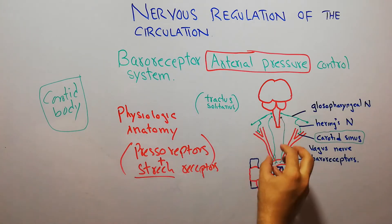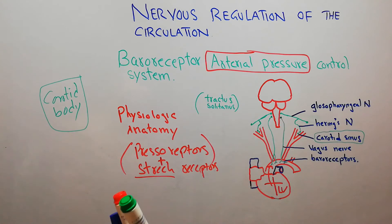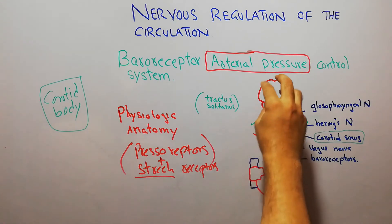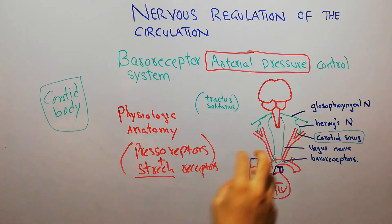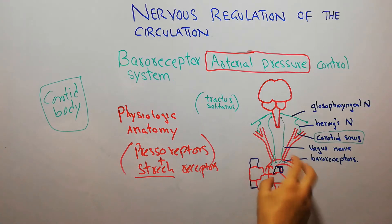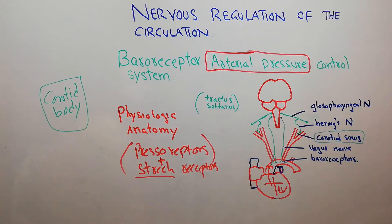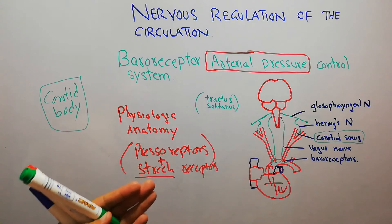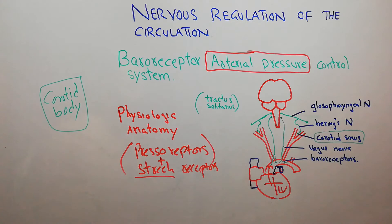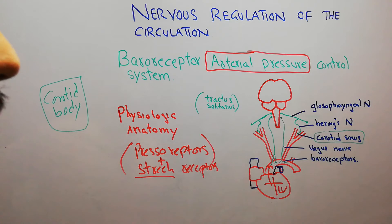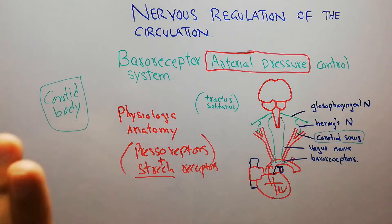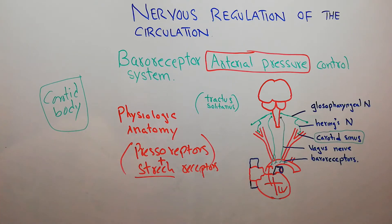Baroreceptors are essentially input devices for the human brain — the brain detects pressure in the blood vessels with the help of these baroreceptors. These receptors respond very well to stretch, and more stretch occurs due to increased arterial pressure. They are present at the carotid sinus and in the arch of the aorta, but are present in almost every artery in the thorax.